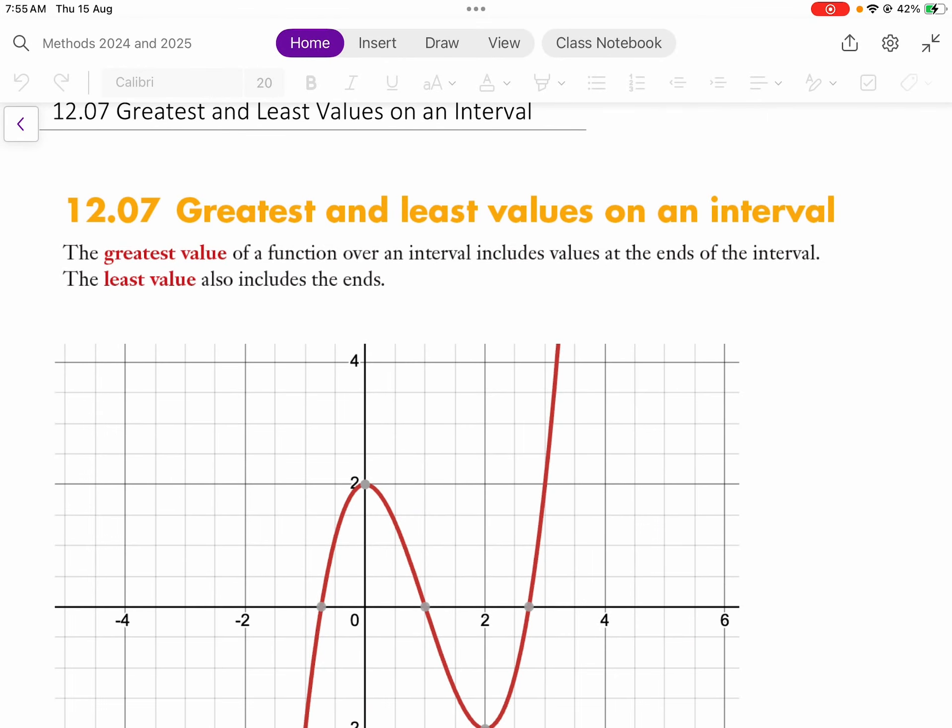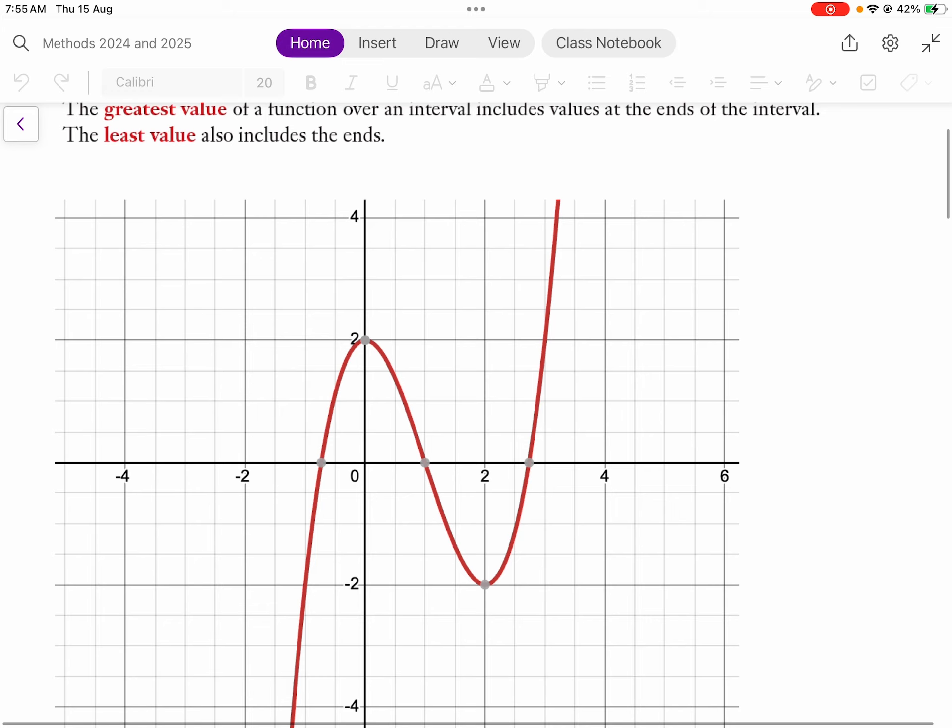Today we're looking at greatest and least values on an interval. We know from previous lessons that we're able to find a maximum or minimum when we're looking for the turning point where the derivative is equal to zero.